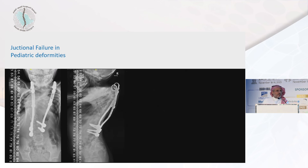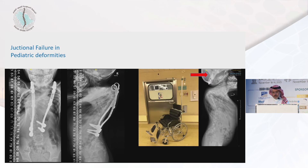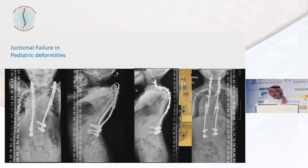Another patient had two VEPTRs. Both ribs broke and both VEPTR rib heads dislodged. We placed the patient in traction, removed the ribs, and allowed slow gradual correction of the junctional failure. We eventually achieved reasonable correction without major osteotomy and without the complications of acute correction of junctional failure.